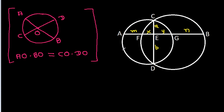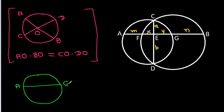Suppose AF is M, and BG is N, and FE is X, and GE is Y, and CE is A, and DE is B. In this circle, chord AG and CD intersect at E, and AE is M plus X, and GE is Y, and CE is A, and DE is B.